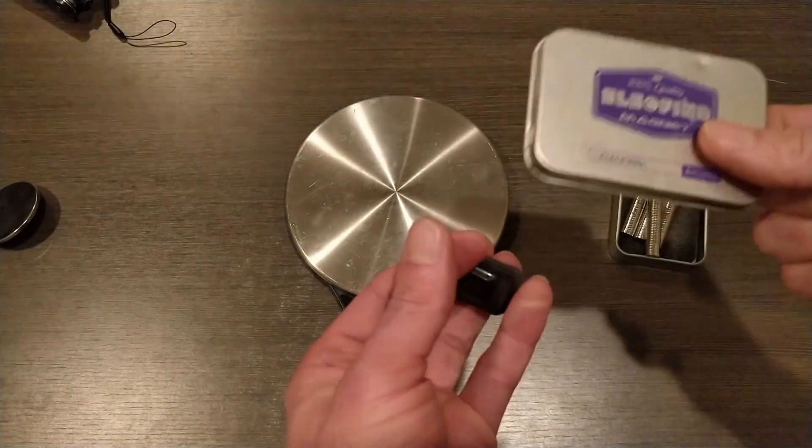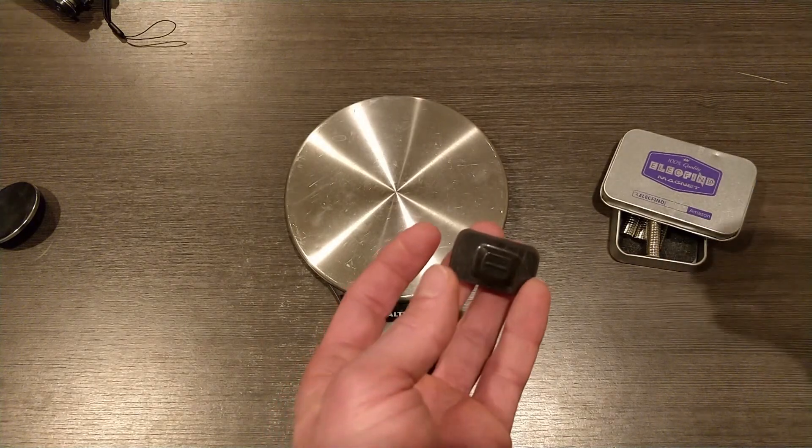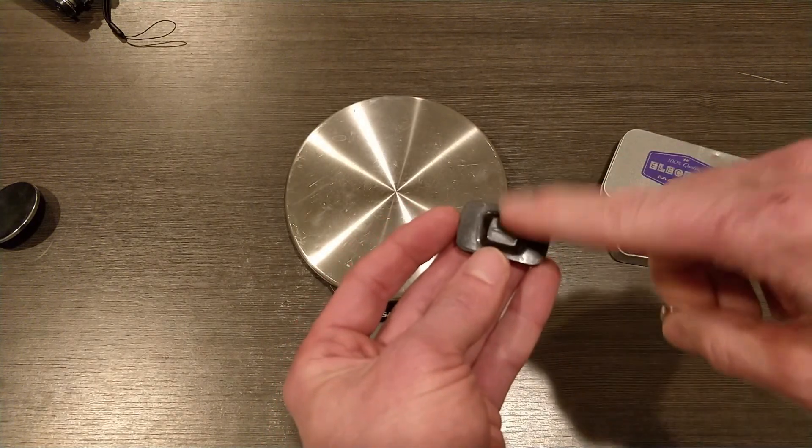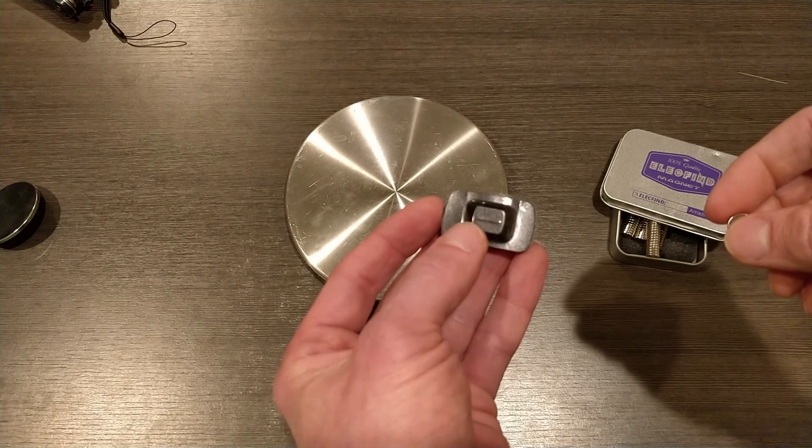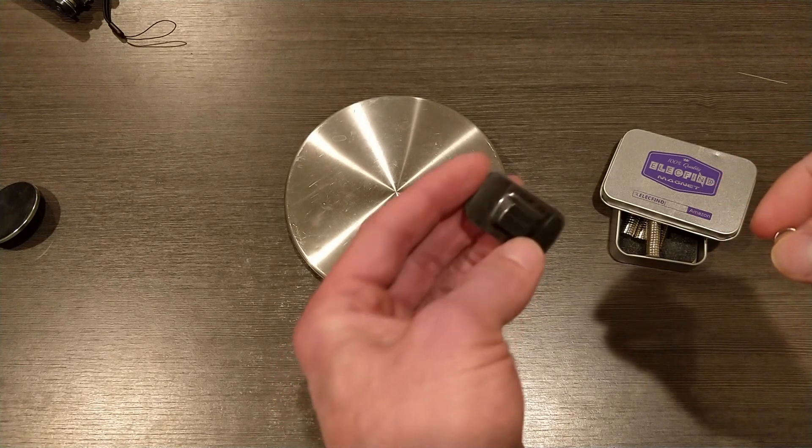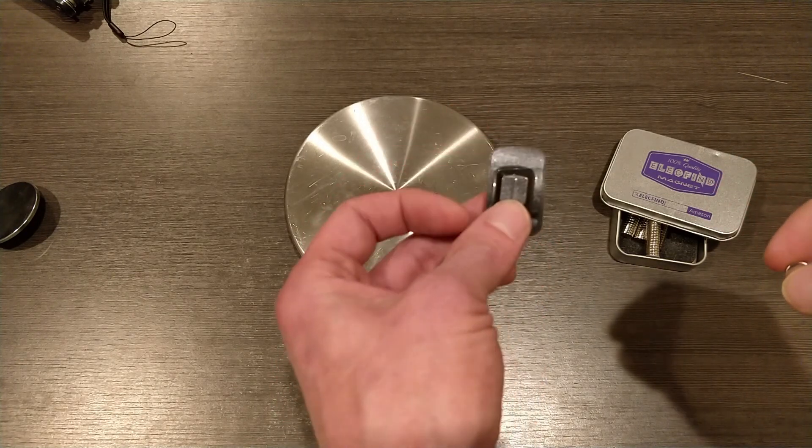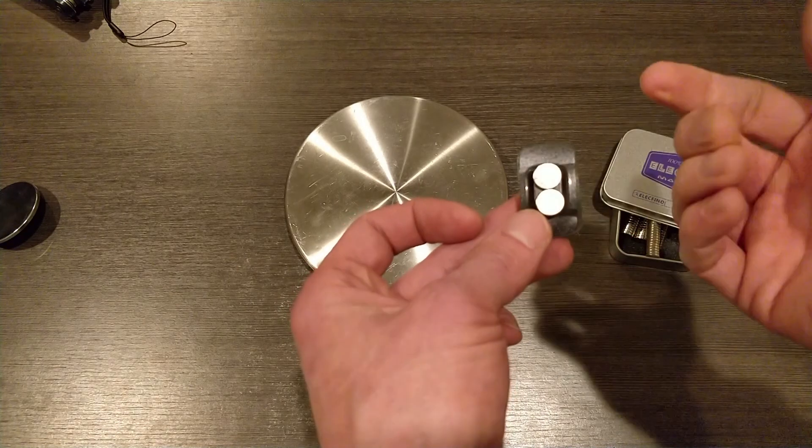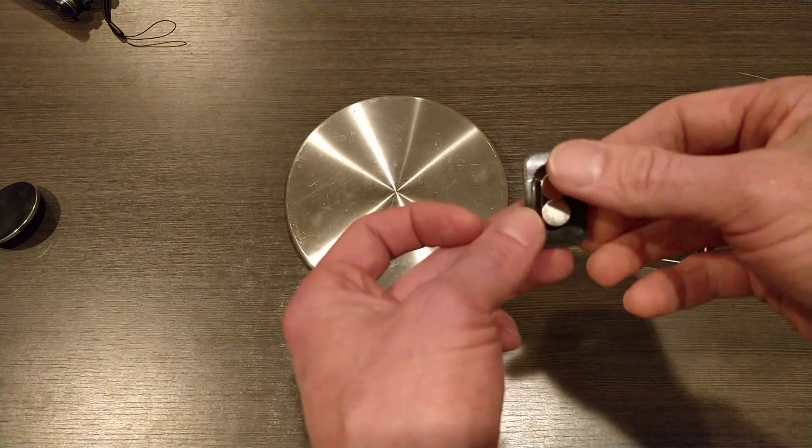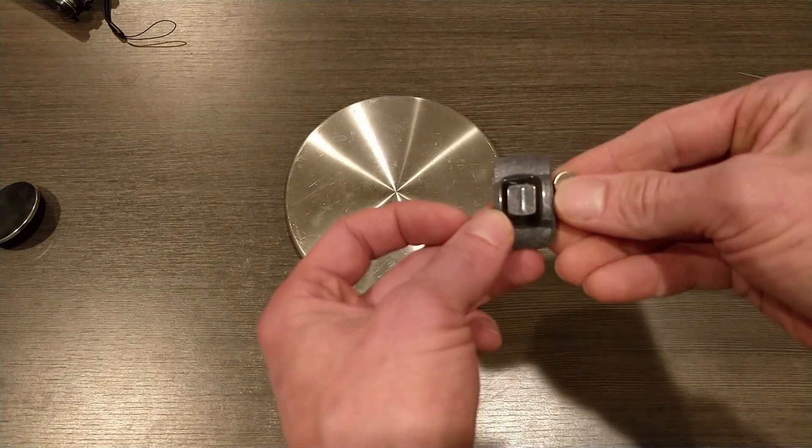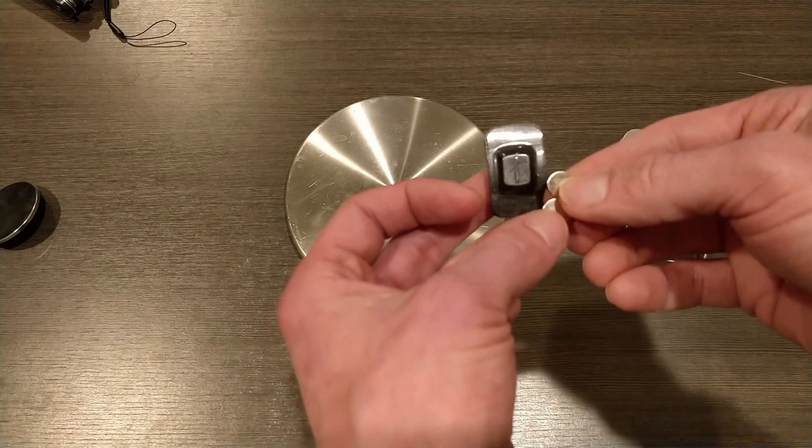And I learned something when I was putting them on the bike. I figured a magnet's a magnet, right? But this is actually two magnets and they're placed in opposite polarity like this. So when you replace it, you have to make sure that you maintain that opposite polarity as well.